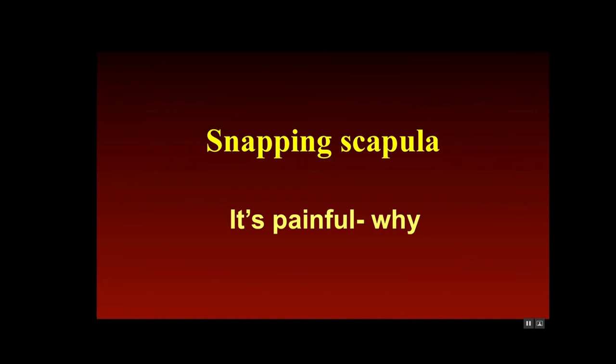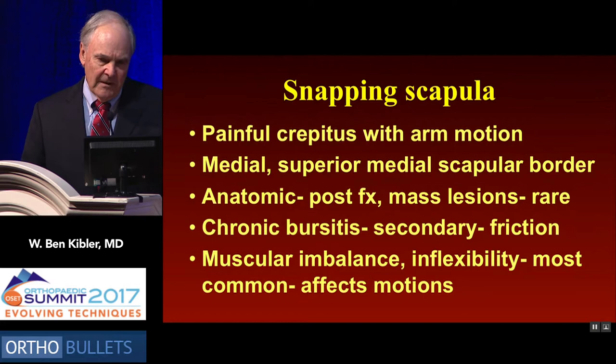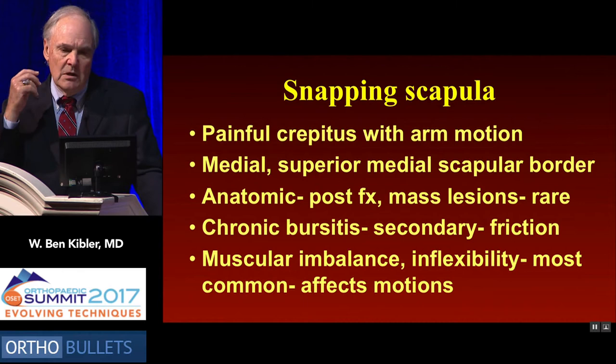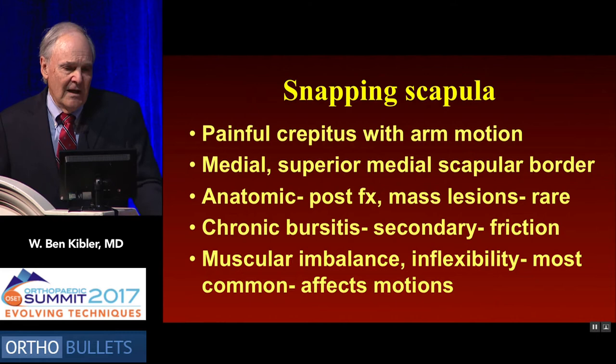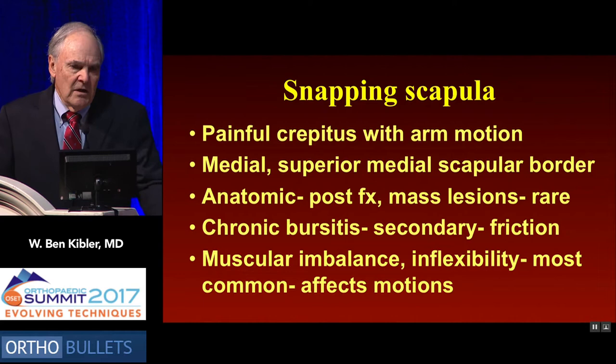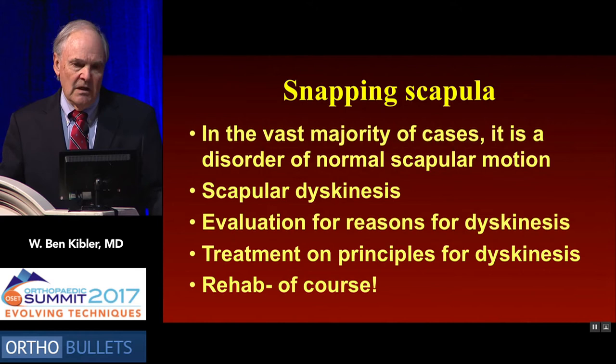Kevin said it's painful — why, and what are we going to do about it? The characteristic of snapping scapula is painful crepitus with arm motion, usually at the medial superior border. Occasionally you'll see an anatomic reason — a mass lesion — and you see chronic bursitis from secondary friction. There's some muscle imbalance, but basically snapping scapula, in the majority of cases, is a disorder of normal scapular motion, and therefore it's scapular dyskinesis. We're going to evaluate and treat it based on the principles of dyskinesis.